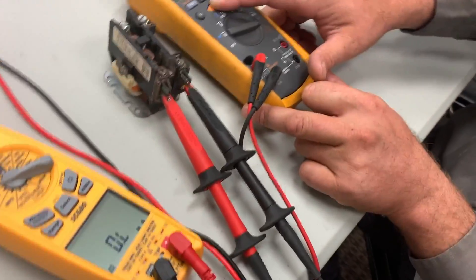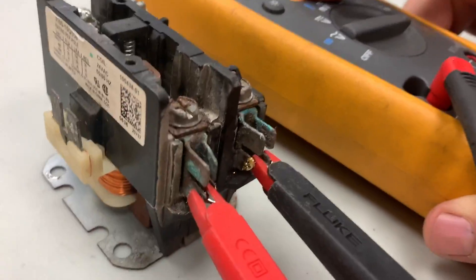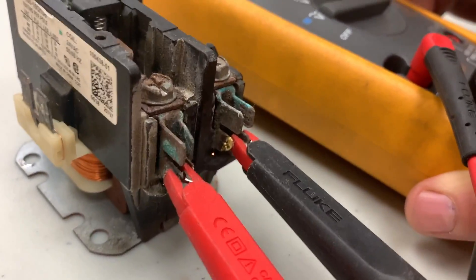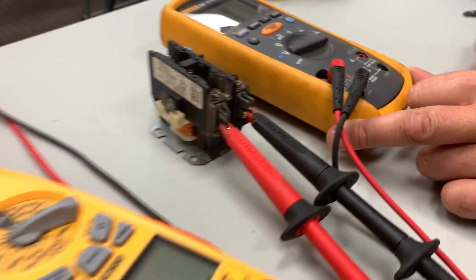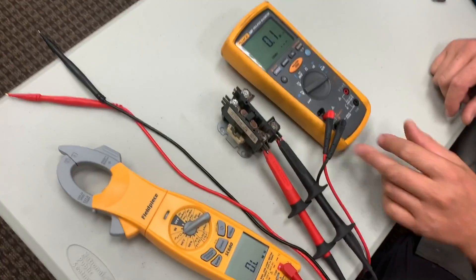You can see the arc? Yeah. Where's it happening at? Next to the contact on the right. Super strange. So now we're going to try to pull this sucker apart and see why that's happening.